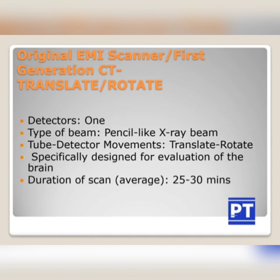In the case of first generation CT, there was only one detector. The type of beam was a pencil-like X-ray beam. The tube-detector movement was translate-rotate, and it was specially designed only for the evaluation of the brain. The duration of the scan was about 25 to 30 minutes.